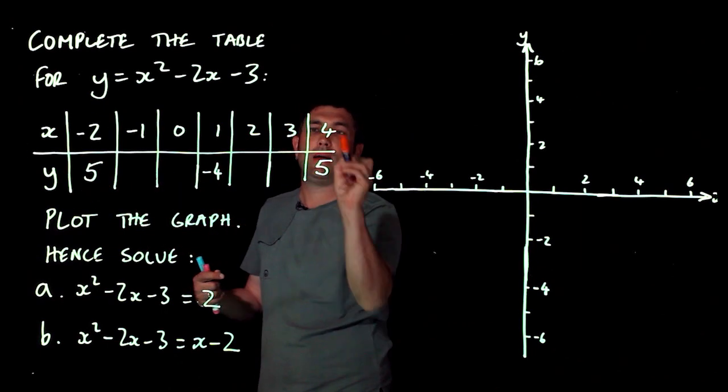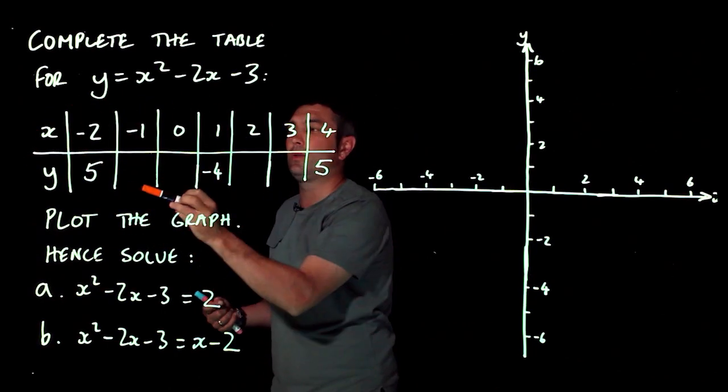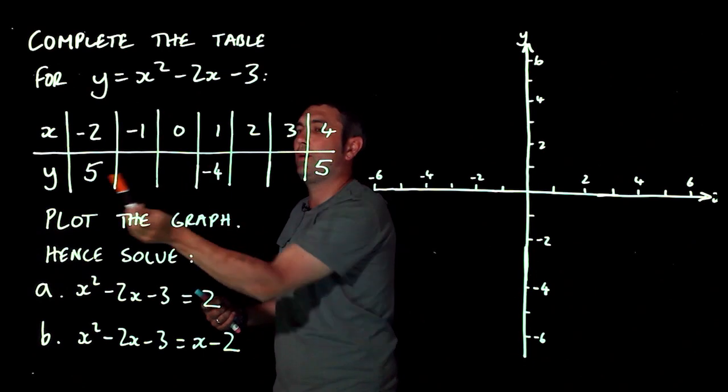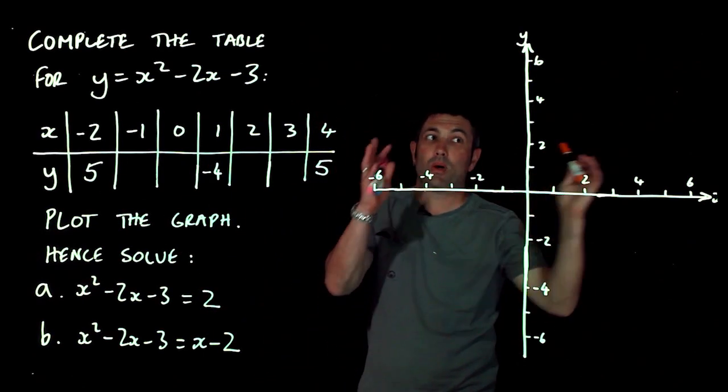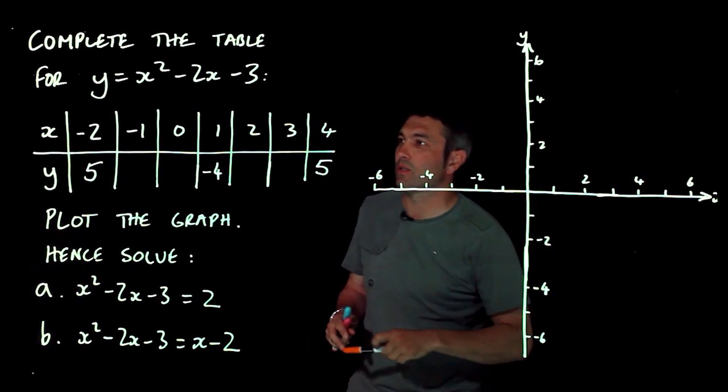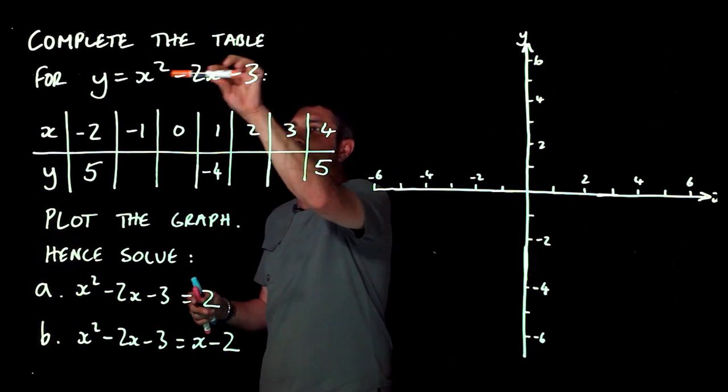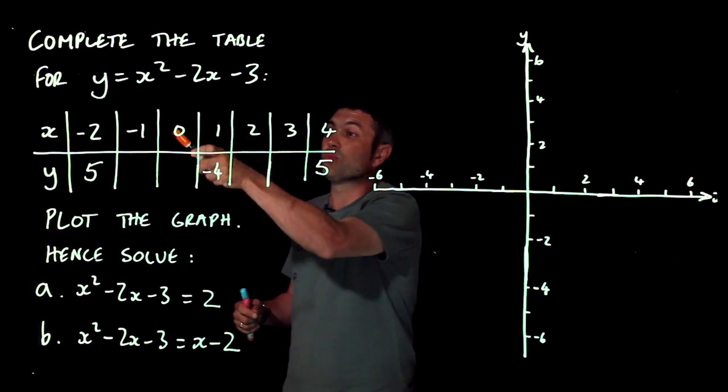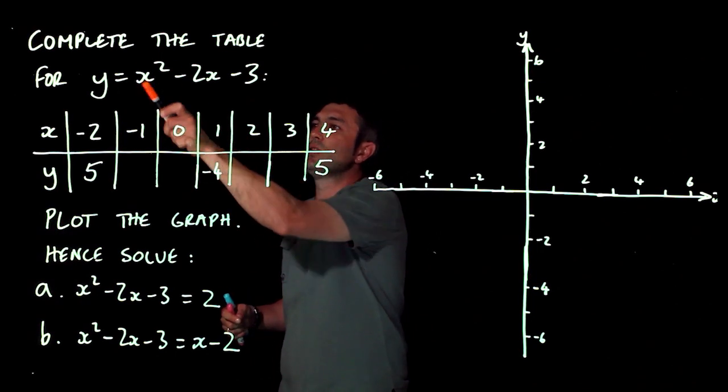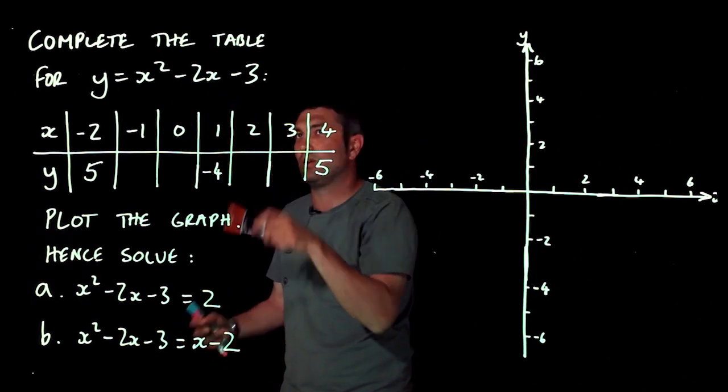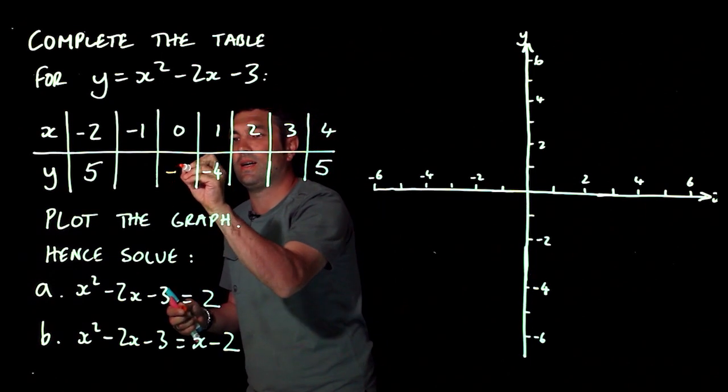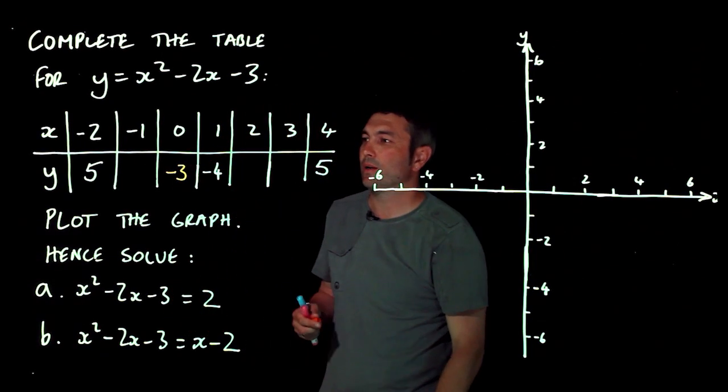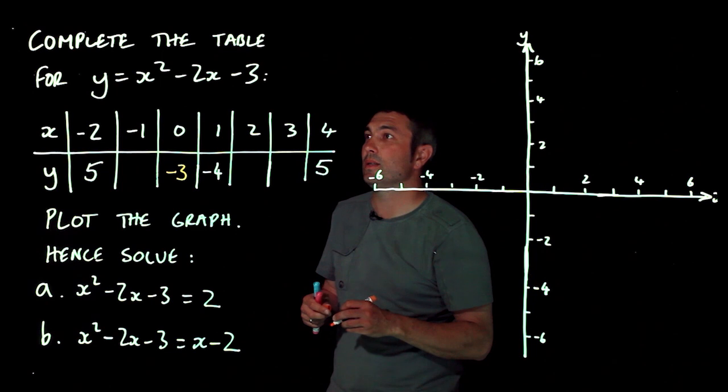We're given a table which they filled in a couple of numbers for us, and we're given a grid on which to draw it. So let's start shoving some numbers into this and getting some y coordinates. The easiest one is probably 0. So 0 squared is 0, take away 2 lots of 0 is 0, take away 3. There we go, negative 3 is the answer there.